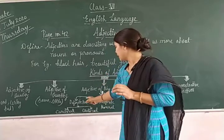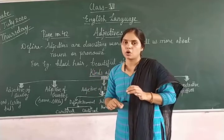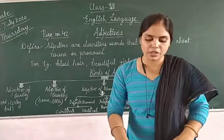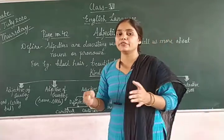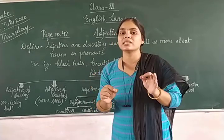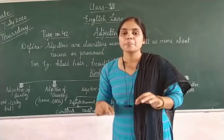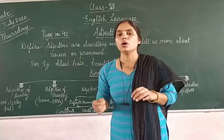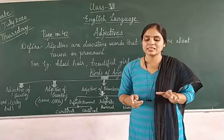So definite numeral adjective tells us the exact number of that thing. Now move on to indefinite numeral adjective — it does not tell us the exact number of a noun or pronoun.